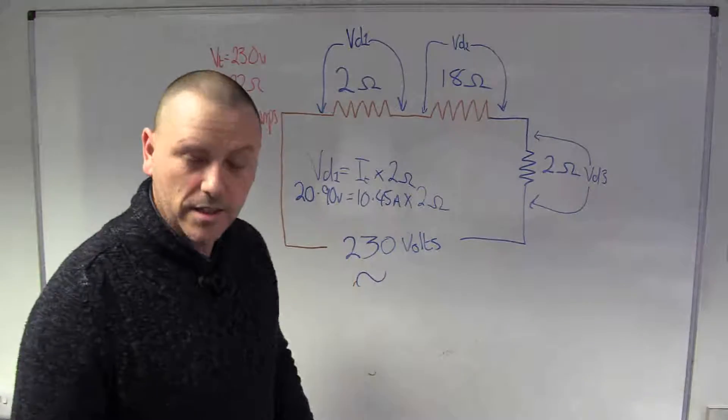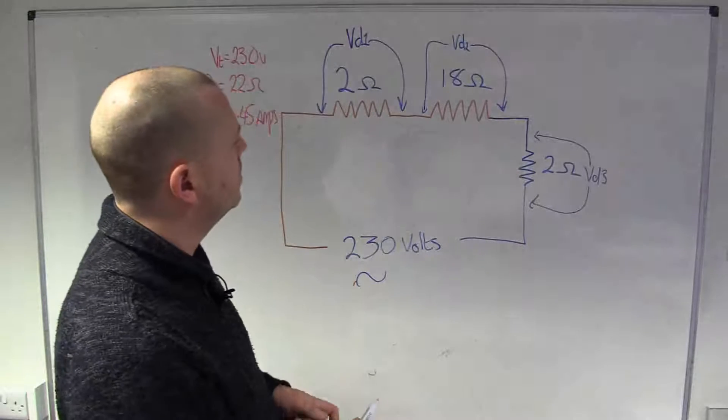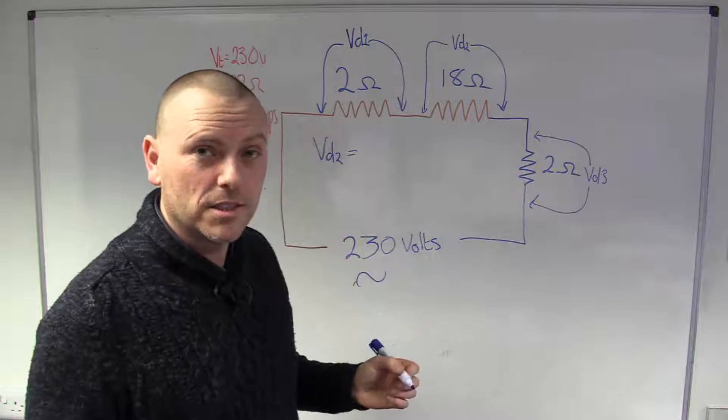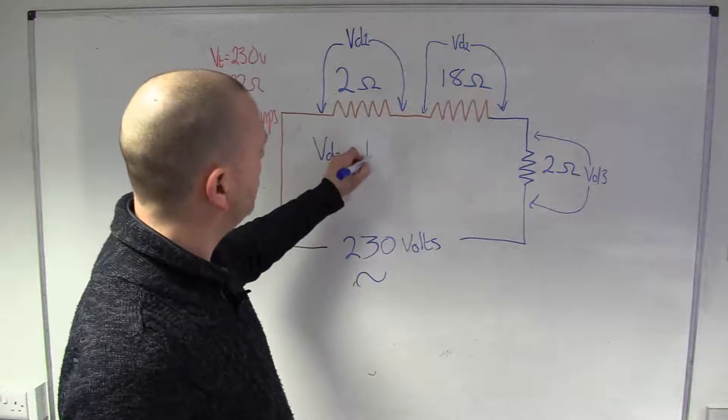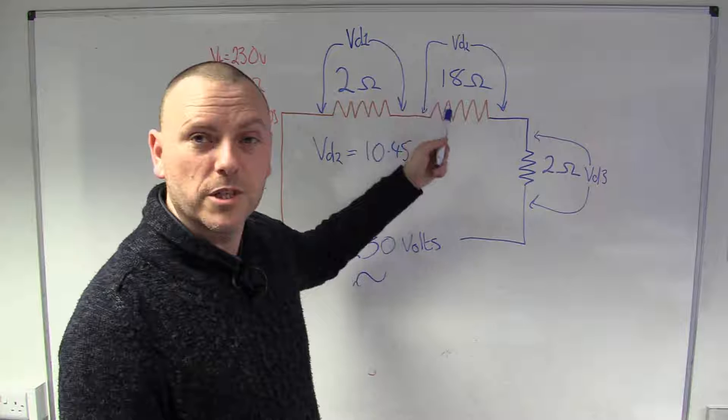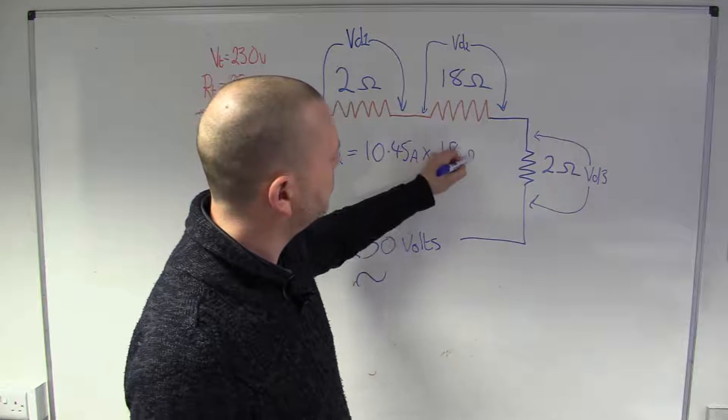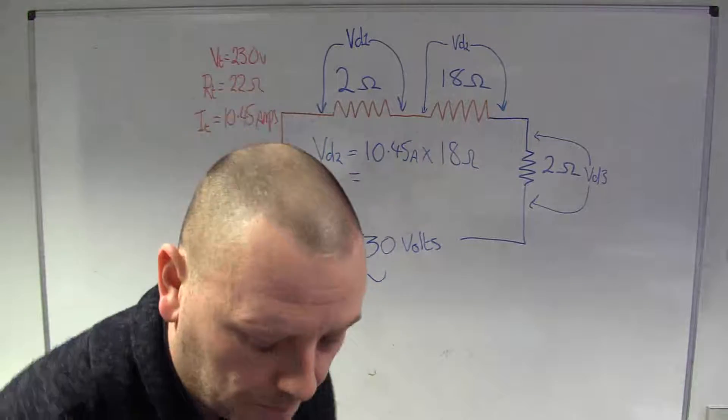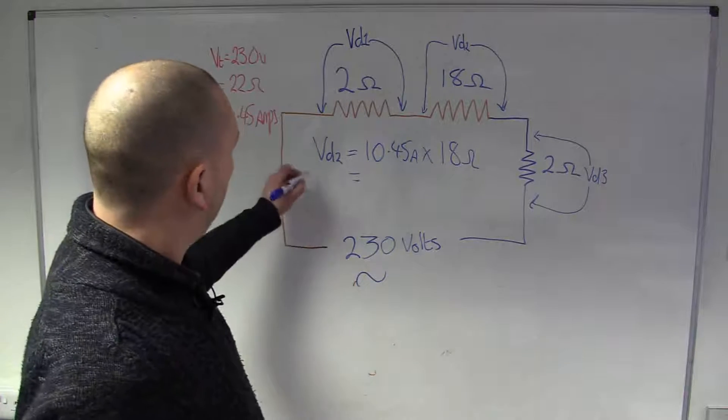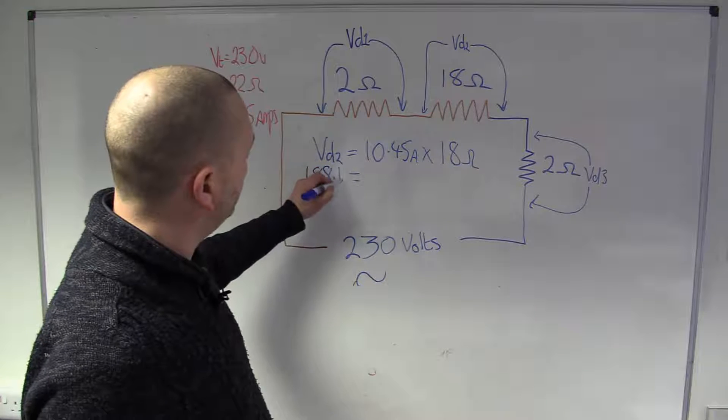And again, we can do the same thing for the second resistor. And we can work out the volt drop there. That would be volt drop 2 is equal to the same current because it's still the same current. So, our 10.45 Amps times by this resistor because we're interested in the volt drop across that one now. So, 18 Ohms. And yeah, I will need to calculate for that one. 10.45 times 18, 188.1 Volts lost.